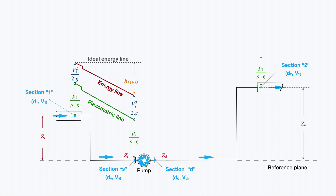Regarding section 2, the pipe where we want to transport the fluid from section 1, we have height Z2 over the reference plane. Energy due to pressure: P2 divided by density multiplied by gravity. And the other term to consider is, of course, the kinetic energy. We also need to take into account the pressure losses, because between section D, the discharge flange of the pump, and section 2, energy losses HL between D and 2 will occur.